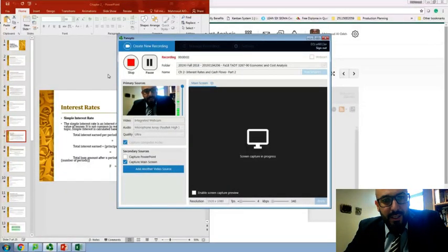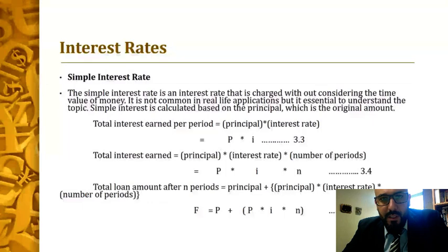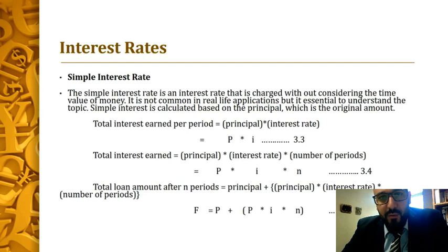In this second video, we're going to talk about interest rates — both types: the simple interest rate and the compounded interest rate. Starting with the simple interest rate, this is a charge that companies are willing to charge you without considering the time value of money. This is not common — we don't see it in banks. When you go to the bank, they will charge you a compounded interest rate. But we have to learn about simple interest before moving on to the compounded interest rate.